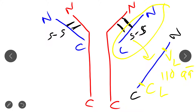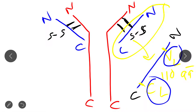So in the light chain, the variable region is present at the N-terminal while the constant region is present at the C-terminal. Both the variable region of the light chain and the constant region of the light chain have the same size, that is 110 amino acids.